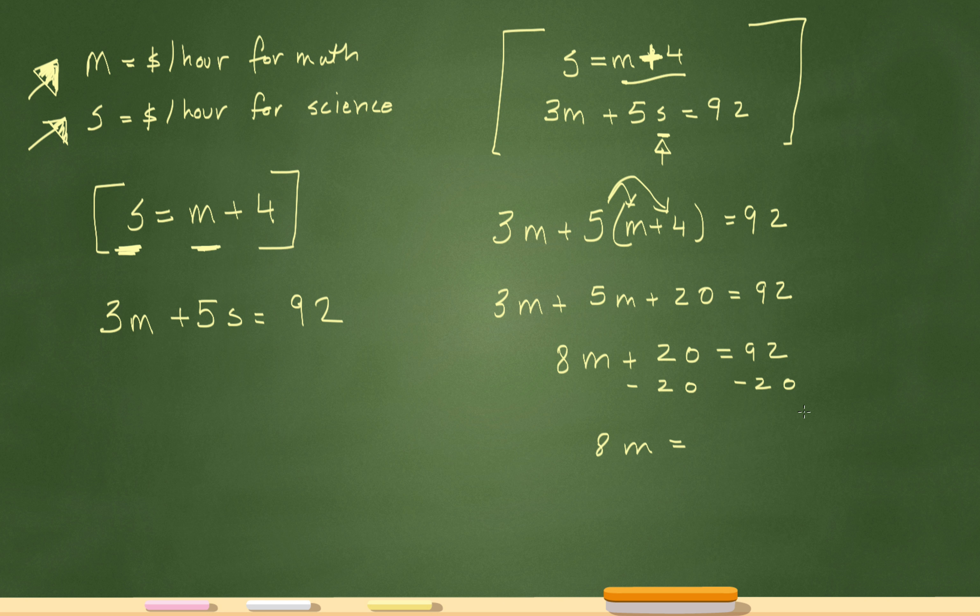Subtract 20 on both sides. 8M will equal 72. Divide both sides by 8 and M will give you 9. So M equals 9, and that's how much—remember my variable M was dollars per hour for math—so I know the answer has to be 9 dollars or 9.